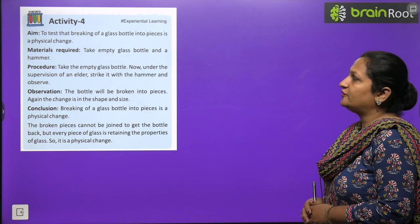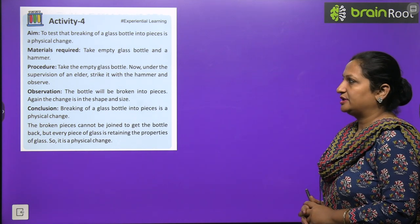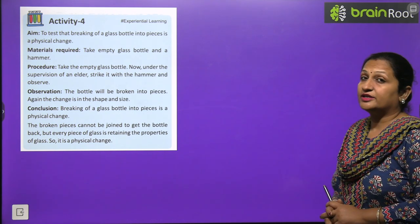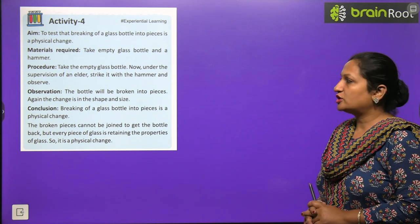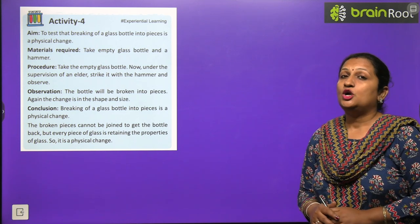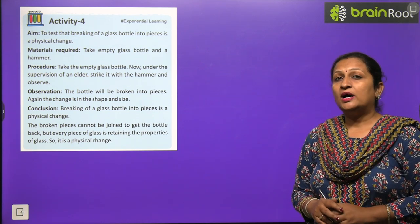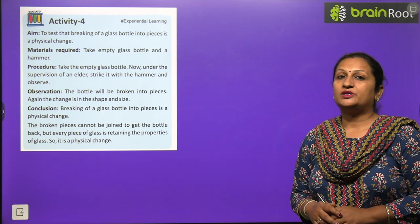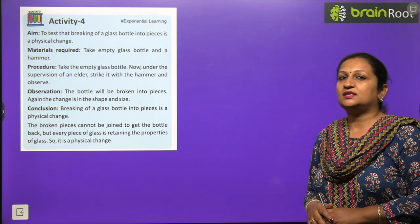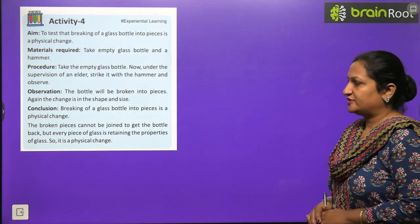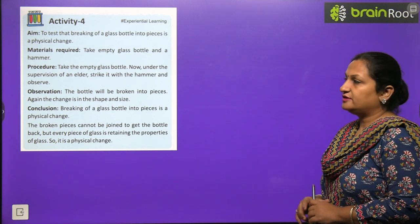Activity: Testing that breaking a glass bottle into pieces is a physical change. Take an empty glass bottle and a hammer. Under adult supervision, strike the bottle with the hammer and observe - the bottle breaks into many pieces. You cannot join the pieces back to make the bottle again, so it is an irreversible change. However, every piece of glass retains the same properties as the original glass bottle. Though irreversible, this is still a physical change.